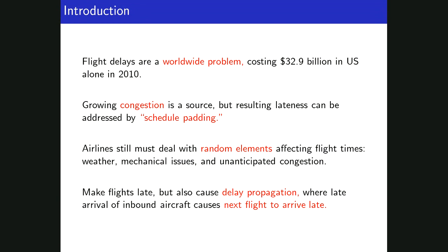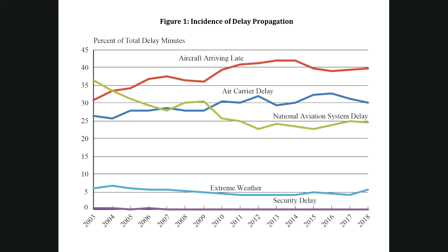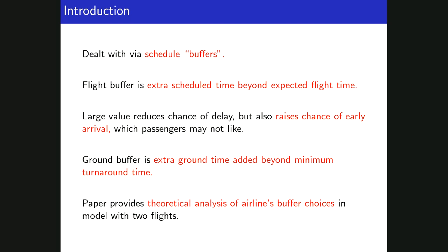When flights are late, it not only inconveniences passengers on board, but it can also cause delay propagation, where the late arrival of the inbound aircraft causes the next flight to depart and arrive late. Here's a graph showing the different contributors to late departures, and the main one is the incoming aircraft arriving late — that's the red line at the top of the graph. Schedule buffers are the way that airlines deal with this randomness problem in flight duration.